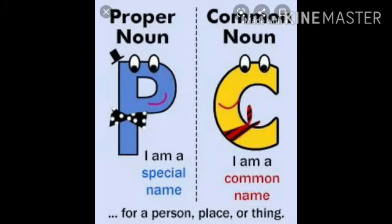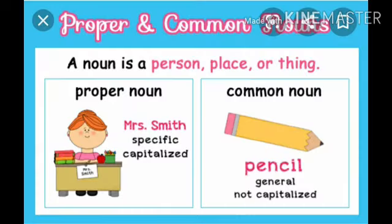Now we will know what is a common noun and a proper noun. Proper noun is a special name and common noun is a common name for a person, place, or thing. A proper noun is the name of a particular person, place, or thing and always begins with a capital letter. So it is specific and capitalized.